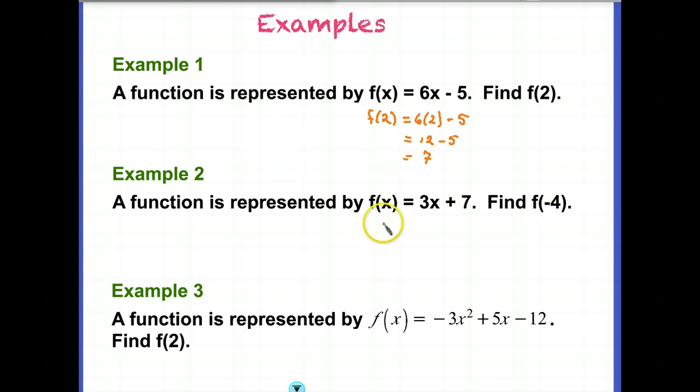So again, now you can see that we need to put in a -4 in place of our x's. So we have 3 times -4 plus 7. And that is the only operation that I'm doing in here. This, again, is just informational.